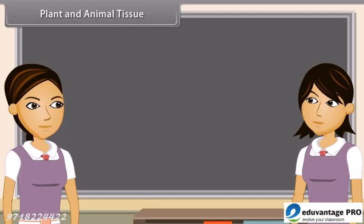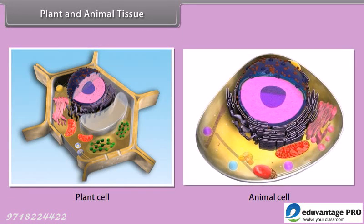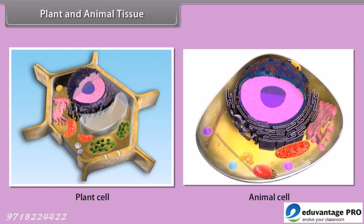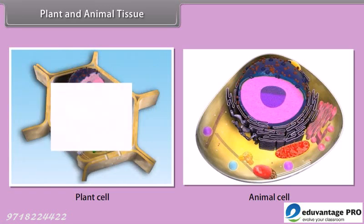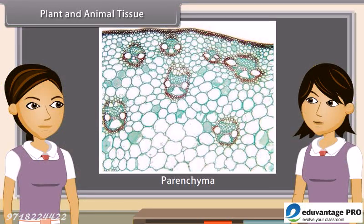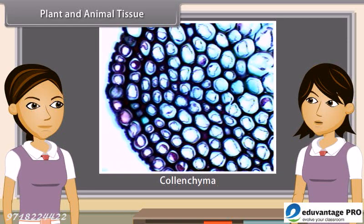Plants and animals are both living organisms, but their internal structures are entirely different. One major difference is that plants are autotrophic — they can make their own food in the presence of sunlight, carbon dioxide, and water with the help of chloroplasts. They are also fixed at one place, so the tissues in plants are mainly suited to these characteristics.